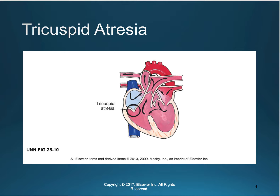In tricuspid atresia, there is no communication between the right atrium and the right ventricle. As you can see, the blood flow is entering the right ventricle from the left ventricle, so you have all this oxygenated blood mixing.